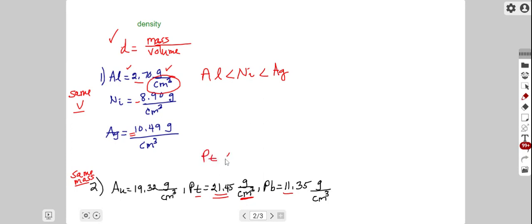So platinum is going to occupy the least amount of space or have the least volume, followed by gold because gold is in between. And finally, the sample that will occupy the most space based on having the lowest density, again for comparing the same mass samples, is going to be the lead because it has overall the lowest density of these samples.